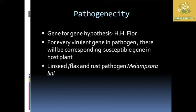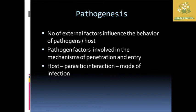The gene-for-gene hypothesis defined by Flor states: for every virulence gene in the pathogen, there must be a corresponding susceptible gene in the host plant. For example, in flax or linseed, the rust pathogen Melampsora lini is the causative agent. External factors also influence host-pathogen behavior — this is called the disease triangle, where host, pathogen, and environment each form a corner. The three modes of parasitic interaction and infection are the major points in pathogenesis.